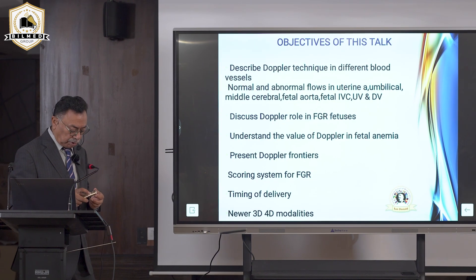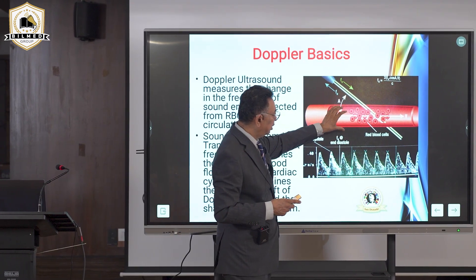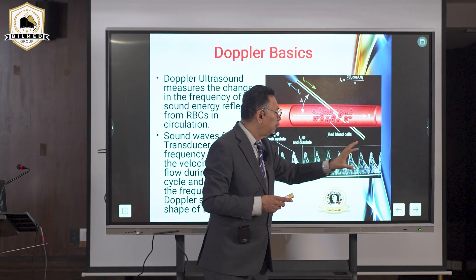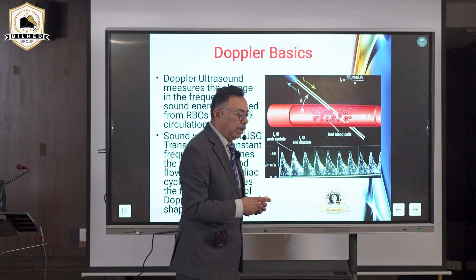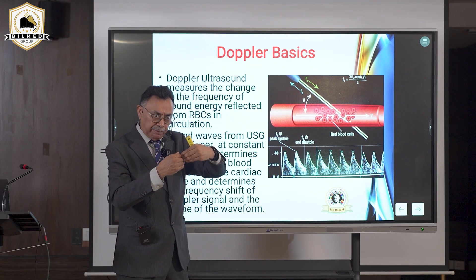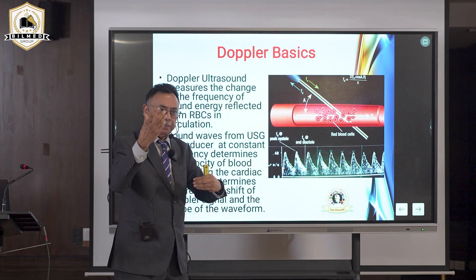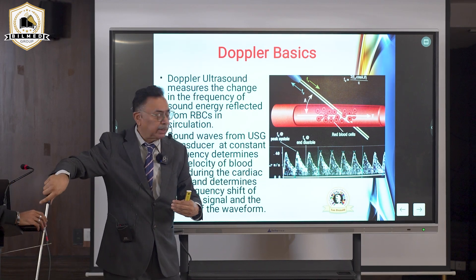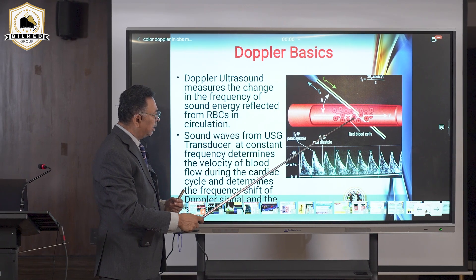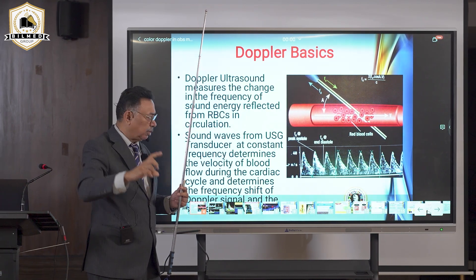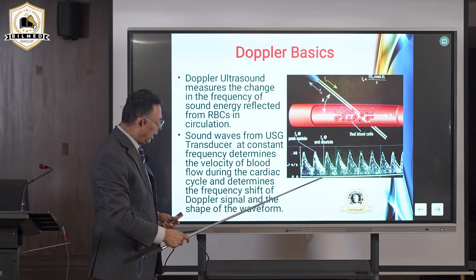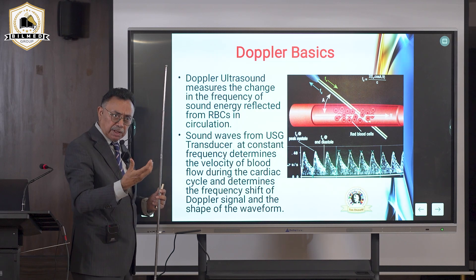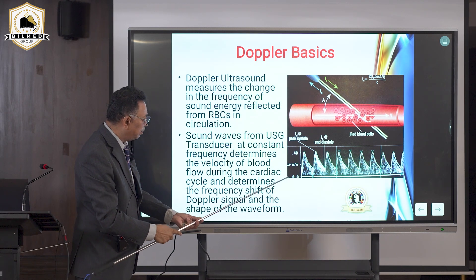The basics of Doppler: RBCs flowing to an organ carry oxygen, and plasma carries food particles. When moving RBCs are struck by the ultrasound beam, they reflect it back. The speed of the RBCs determines the speed of the reflection — that reflected signal is the Doppler beam. This gives you the systolic wave and the diastolic wave above a baseline. Peak systole, end diastole, and the baseline are how we read the waveform.